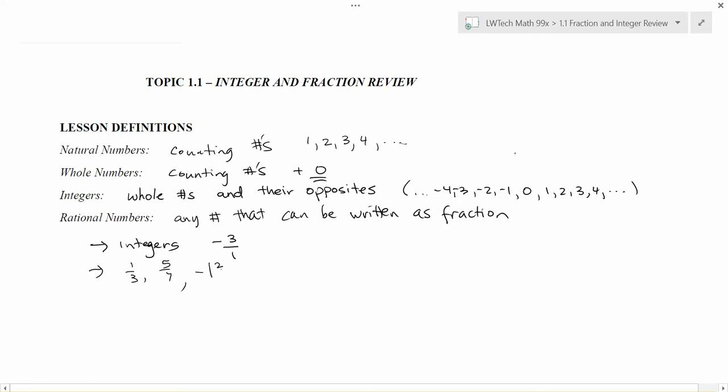We can also include mixed numbers like this, negative one and two-sevenths. We also have other types of values that could be included here. So for example, point four could be written as four-tenths. So any terminating decimal can also be written as a fraction. And in fact, any repeating decimal can also be written as a fraction as well.